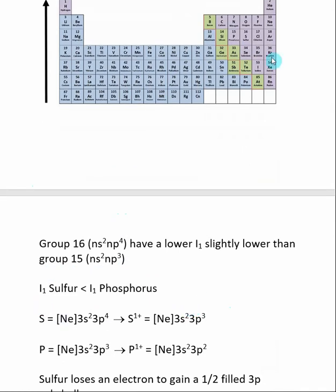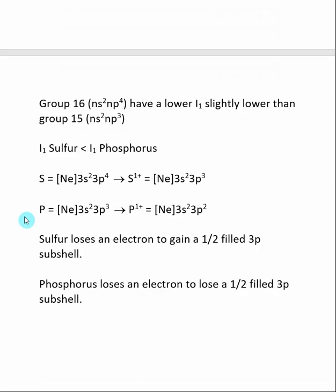A good example of this is that sulfur has a lower ionization energy than phosphorus. The answer for this, once again, comes from the electron configurations.